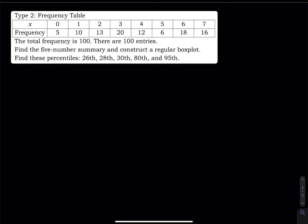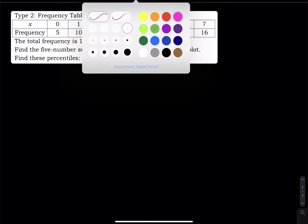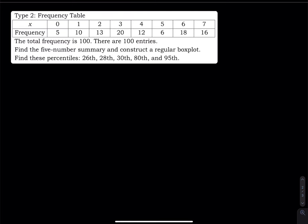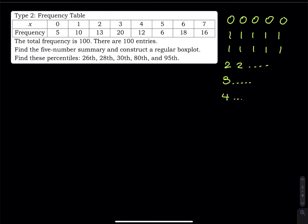We have a table where X means data, and each X value has a frequency. So zero has frequency equals to five. That means you write a zero five times, a one ten times, a two thirteen times, a three twenty times, a four twelve times, and so on. After you're done, you have one hundred entries, because if you add up all the frequencies, the total frequency equals one hundred.